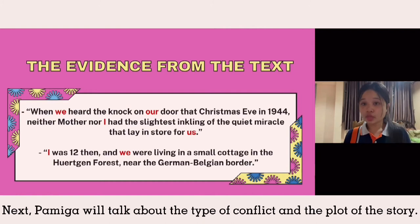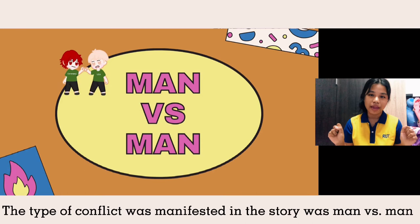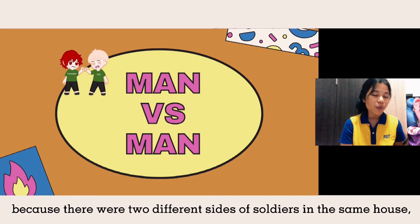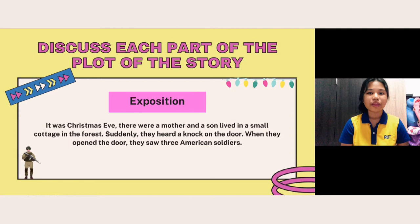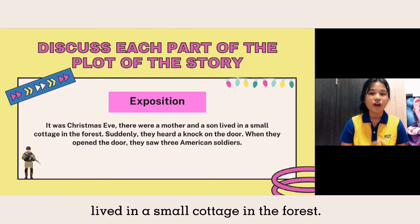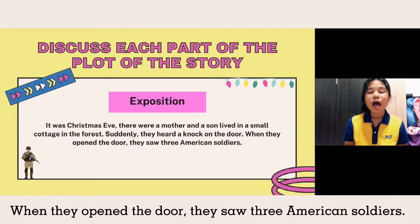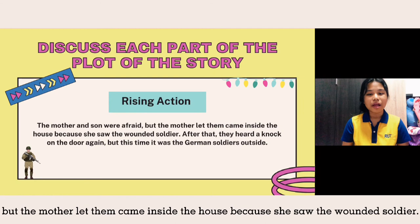Next, we will talk about the type of conflict and the plot of the story. The type of conflict manifested in the story was man versus man because there were two different sides of soldiers in the same house and they had to control themselves not to kill the other side. First, the exposition: it was Christmas Eve. There were a mother and a son living in a small cottage in the forest. Suddenly, they heard a knock on the door. When they opened the door, they saw three American soldiers. Next, the rising action: the mother and son were afraid but the mother let them come inside the house because she saw the worried soldier.